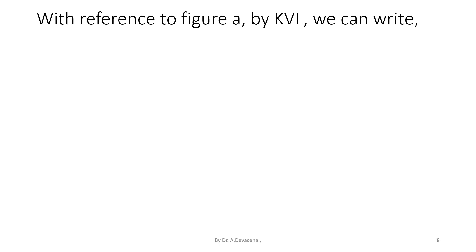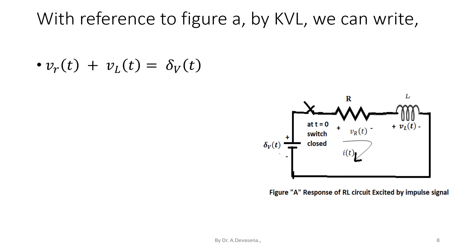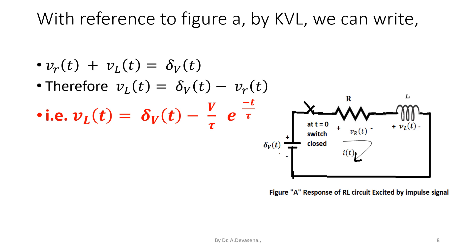With reference to figure A by KVL, we can write V suffix R of T plus V suffix L of T is equal to delta suffix V of T. Therefore V suffix L of T, that is the voltage drop across the inductor, is equal to delta suffix V of T minus V suffix R of T. Substituting the value of V suffix R of T, we get V suffix L of T is equal to delta suffix V of T minus V by tau into e power minus T by tau. This is the value of the voltage drop across the inductor.